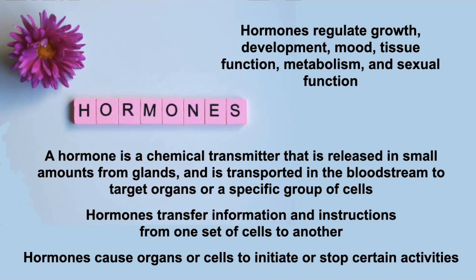Hormones are going to regulate growth, development, mood, tissue function, metabolism, and sexual function. These hormones transfer information and also certain instructions from one set of cells to another, so it's a communication system. Hormones will cause certain organs or cells to start or stop certain functions.